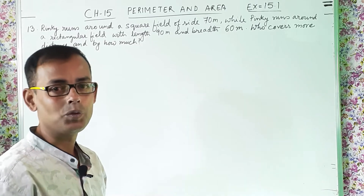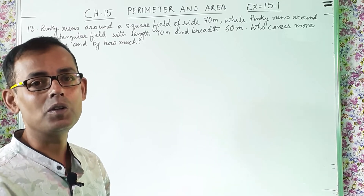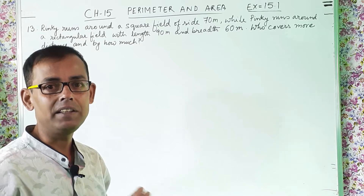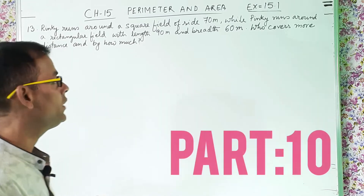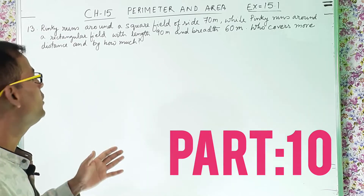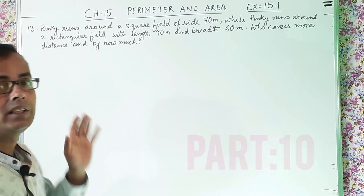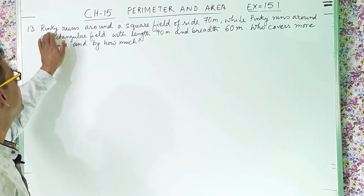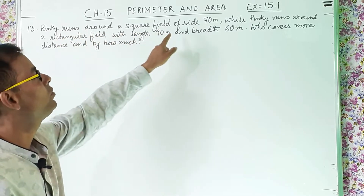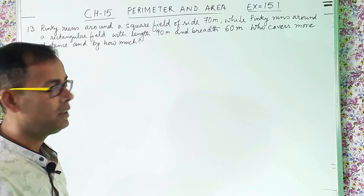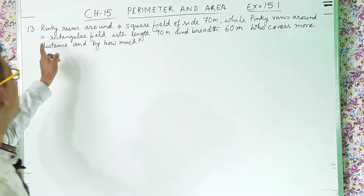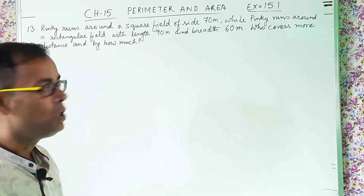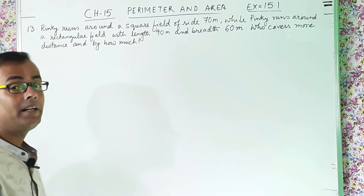Class 6 students, today we are going to solve chapter 15, Perimeter and Area, and this is the tenth part, part 10. It is a continuation of this chapter and today we are going to solve question number 13. Rinky runs around a square field of side 70 meter while Pinky runs around a rectangular field with length 90 meter and breadth 60 meter. Who covers more distance and by how much?